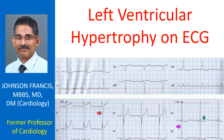Strain pattern in left ventricular hypertrophy is a feature of pressure overload of the left ventricle. In volume overload conditions like aortic regurgitation, tall R waves in leads oriented to the left ventricle are associated with small narrow Q waves in these leads and tall T waves.